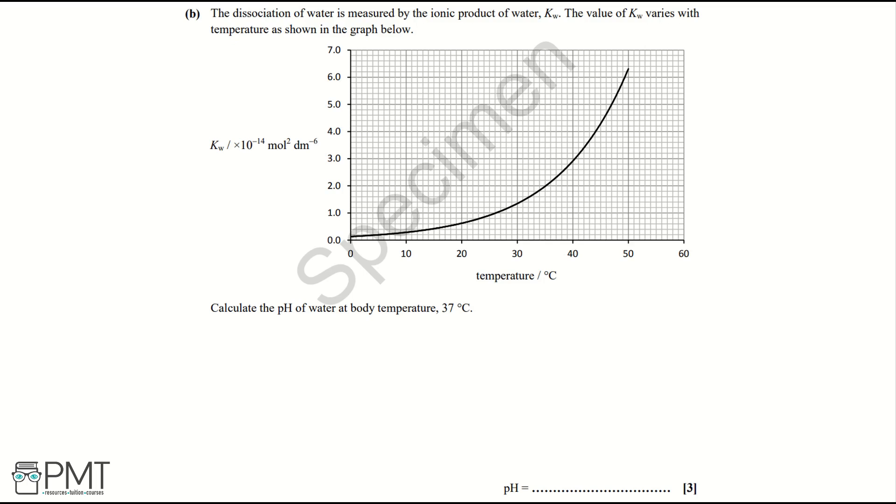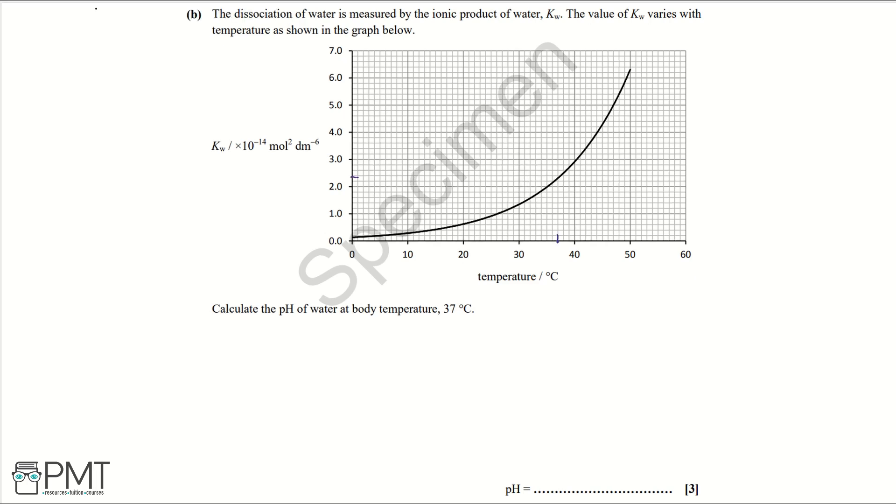Part B: The dissociation of water is measured by the ionic product of water, Kw. The value of Kw varies with temperature as shown in the graph below. Calculate the pH of water at body temperature, 37 degrees Celsius. Firstly, what we need to do is read off the graph at 37 degrees Celsius and find our Kw value of 2.4 times 10⁻¹⁴ mol² dm⁻⁶.